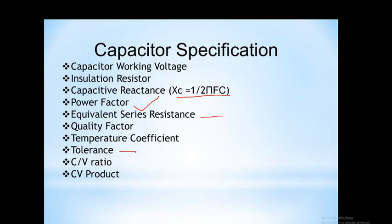Tolerance indicates the change in the value of capacitance from its original value, expressed as a percentage. The CV ratio indicates the ratio of capacitance to volume, indicating capacitance density. The CV product is the product of capacitance and voltage, and it measures the efficiency of the capacitor and total charge stored. All these specifications become important when selecting a capacitor for a specific circuit or application.